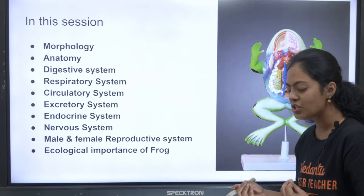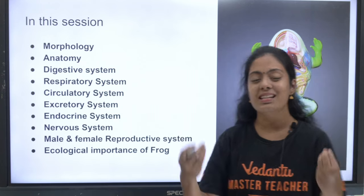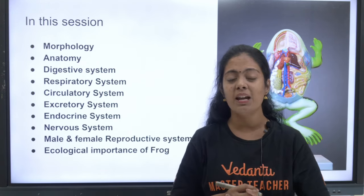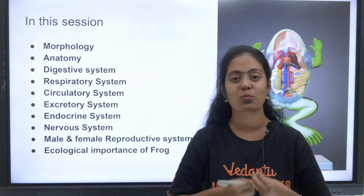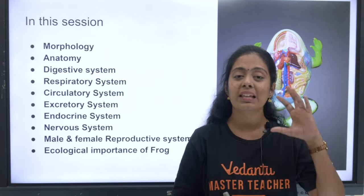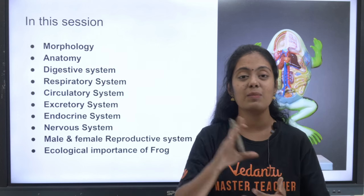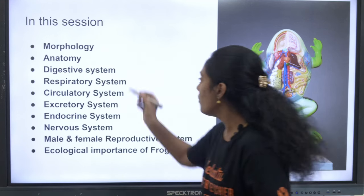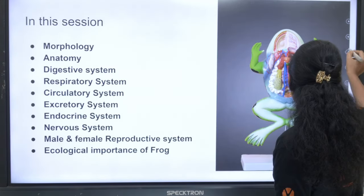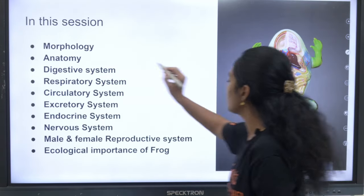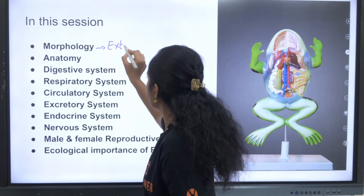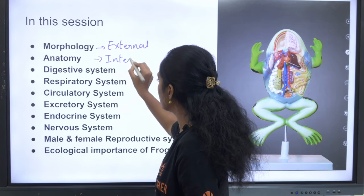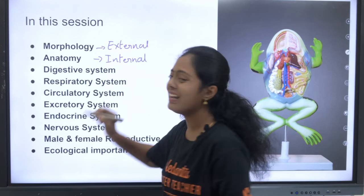What is morphology? Morphology is the external appearance or external features of an organism. Anatomy is the study of internal structures. In Class 11, morphology in flowering plants and anatomy in flowering plants refers to the study of internal features.